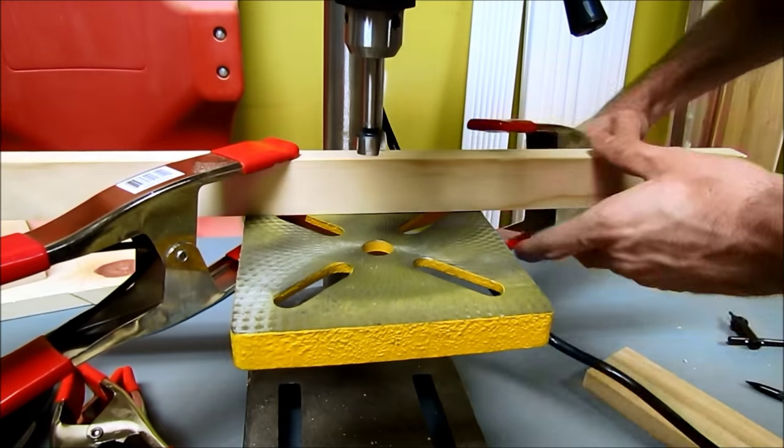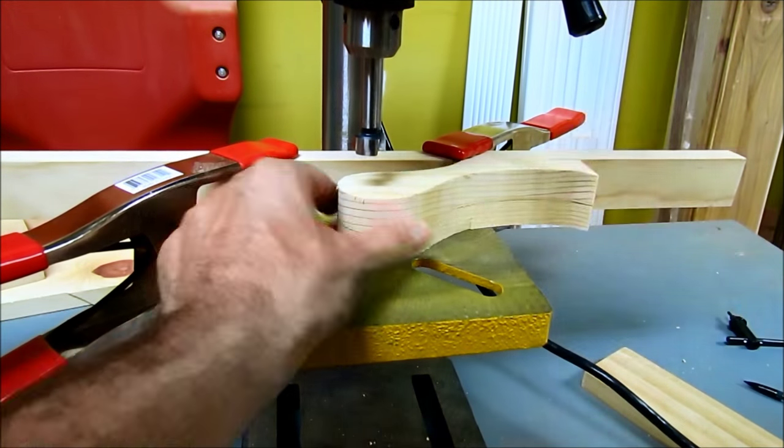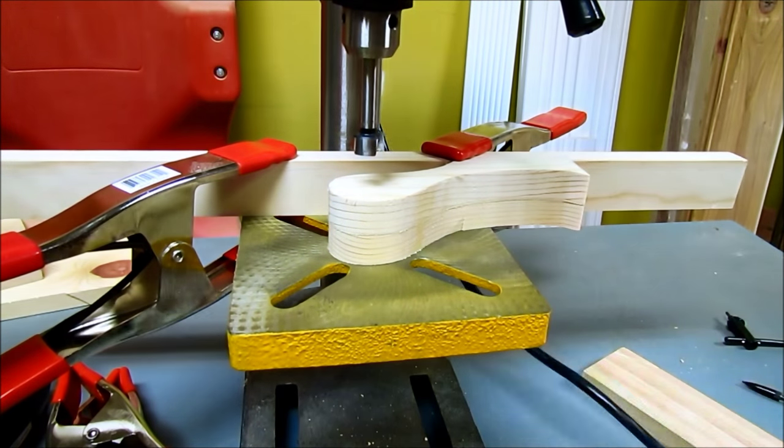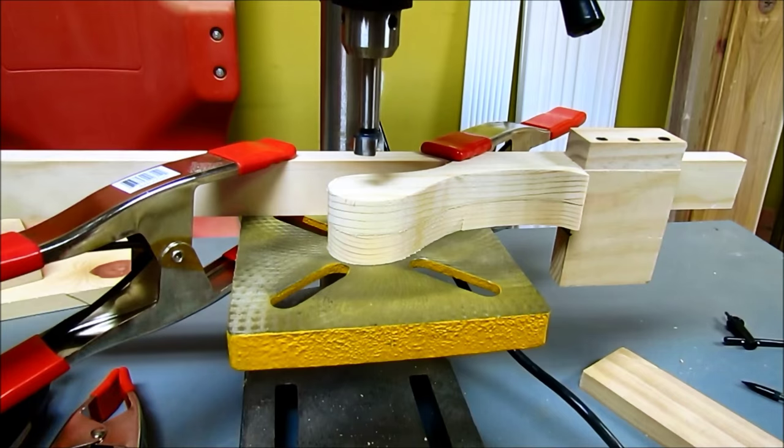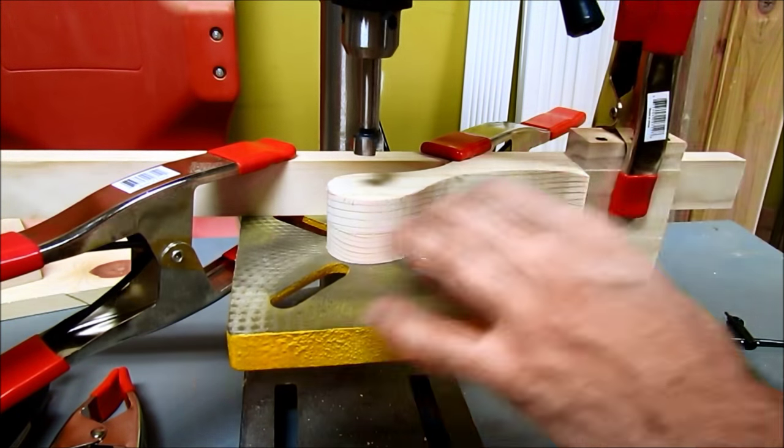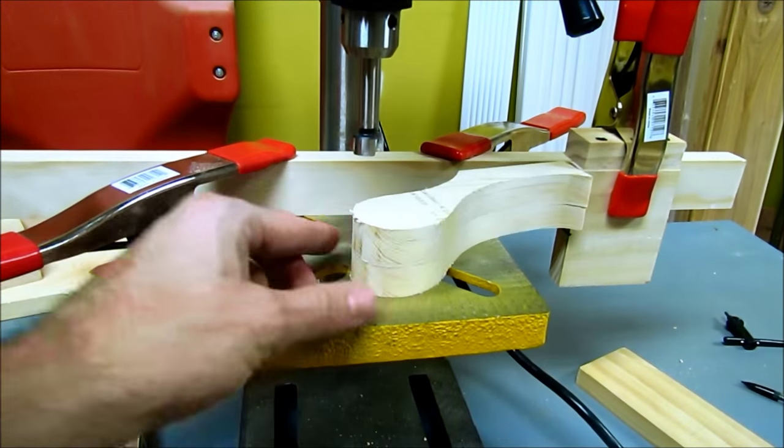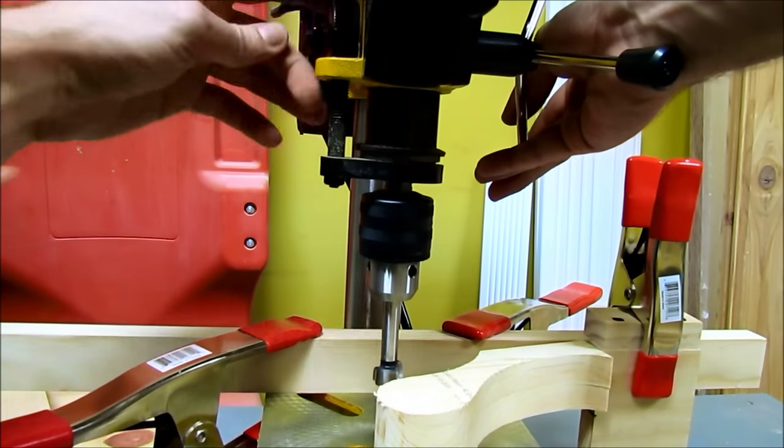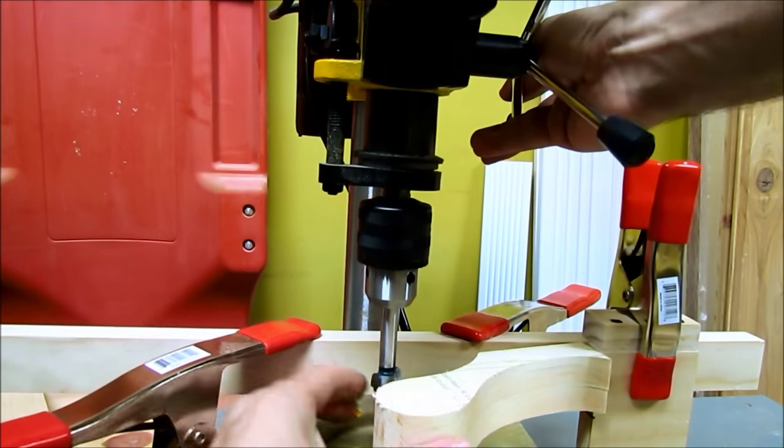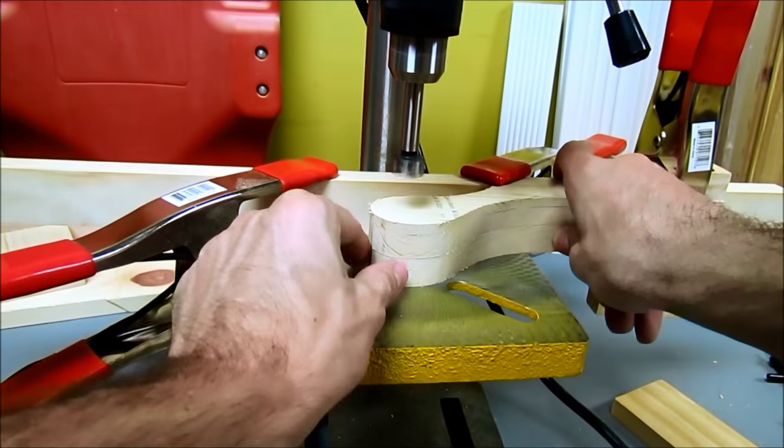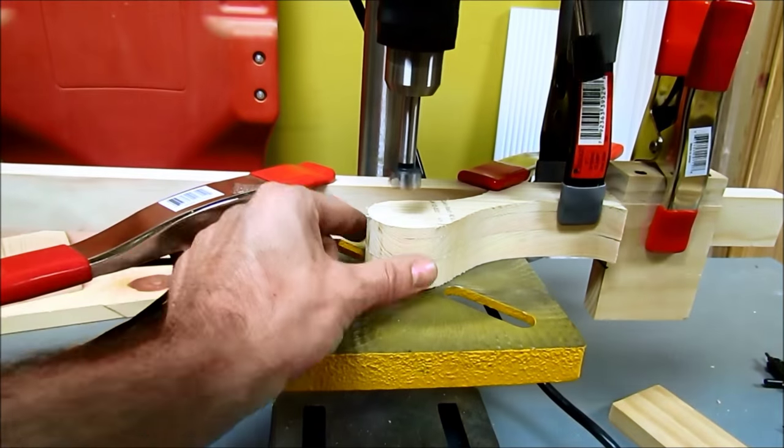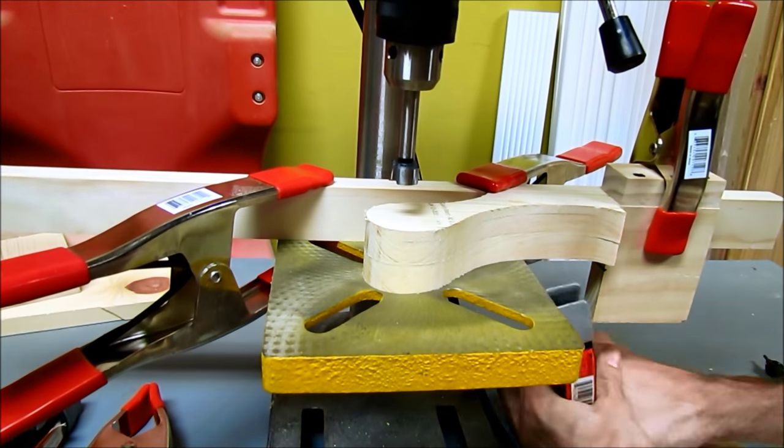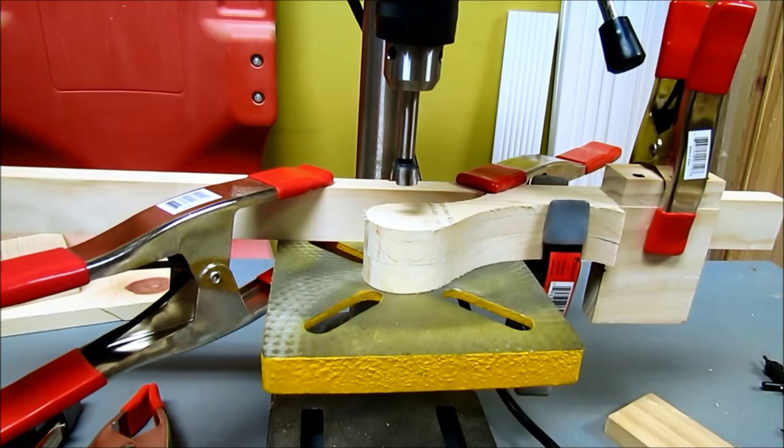Now I'm going to be drilling for the rod, which is three-quarters of an inch. I built a fence on the drill press by clamping a couple of boards together, just to make sure my holes go right in the middle. I also clamped my piece so it's stable and doesn't move around.